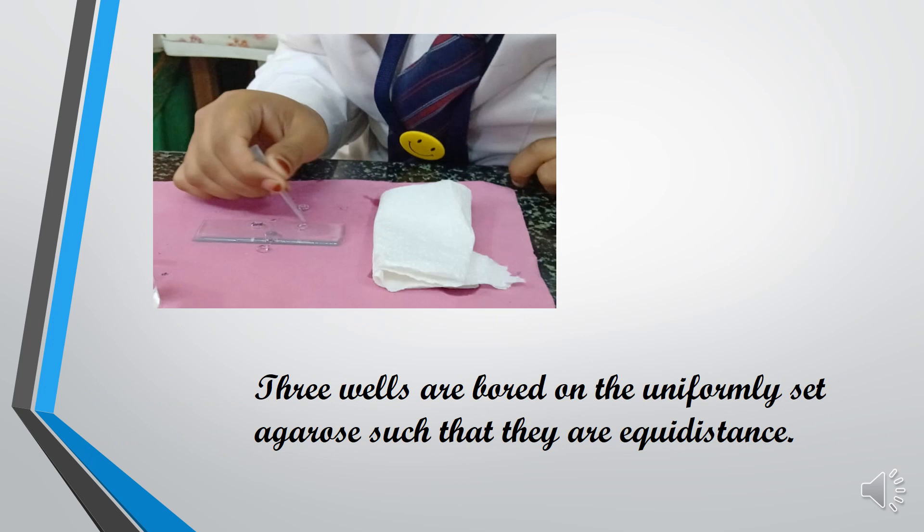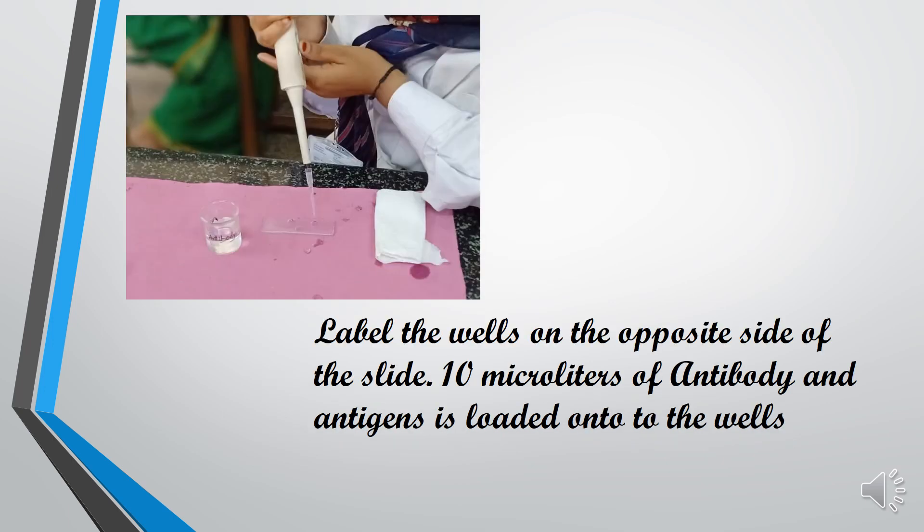Three wells are punched on the uniformly set agarose such that they are equidistant. Label the wells on the opposite side of the slide. 10 microliters of antigen from different species is loaded into the two wells, and a known antibody is loaded onto the third well just below the antigen wells to form a triangle.